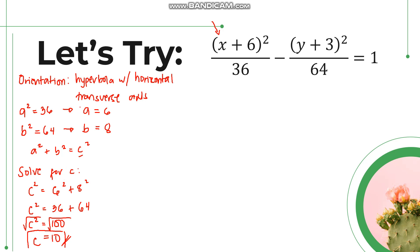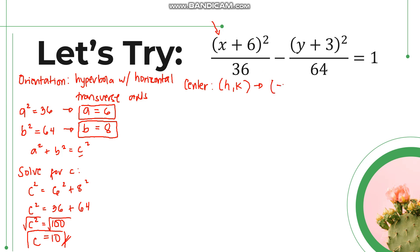Now we have a which is 6, b which is 8, and c which is 10. Let's identify the center so we can have h and k. We know this is (h, k), and by looking at the equation, x is with h and y is with k. So h is negative 6 and k is negative 3. Now we have h, k, a, b, and c, and we can solve for the other parts.